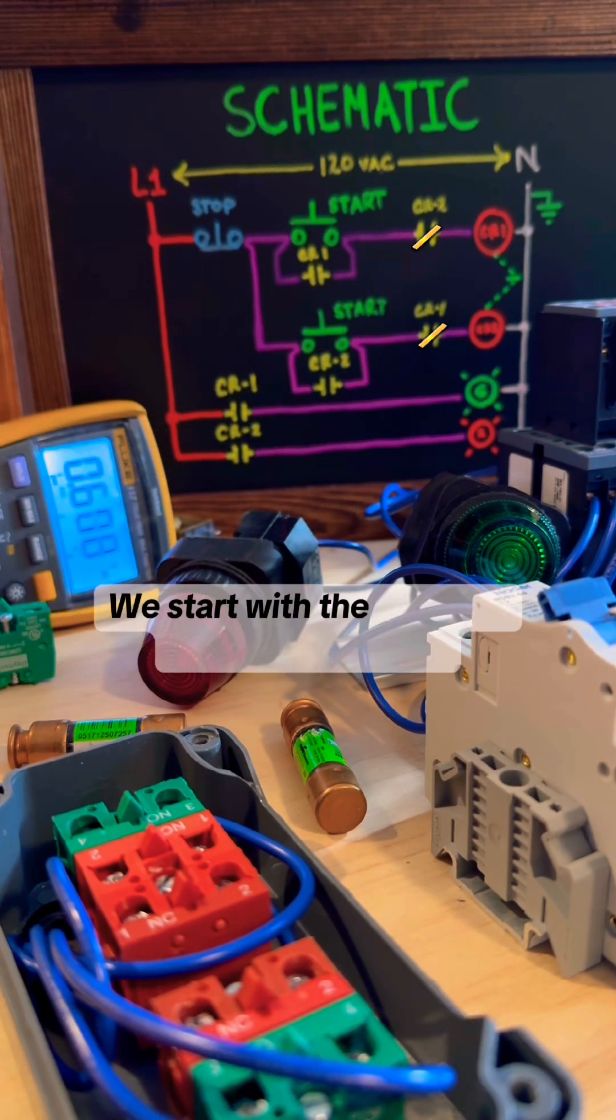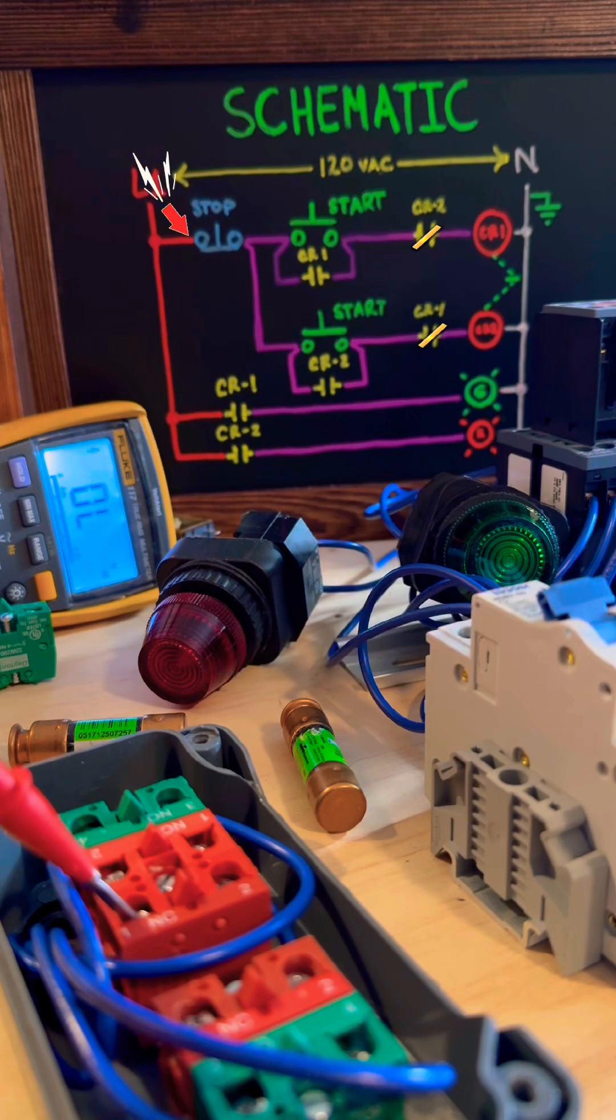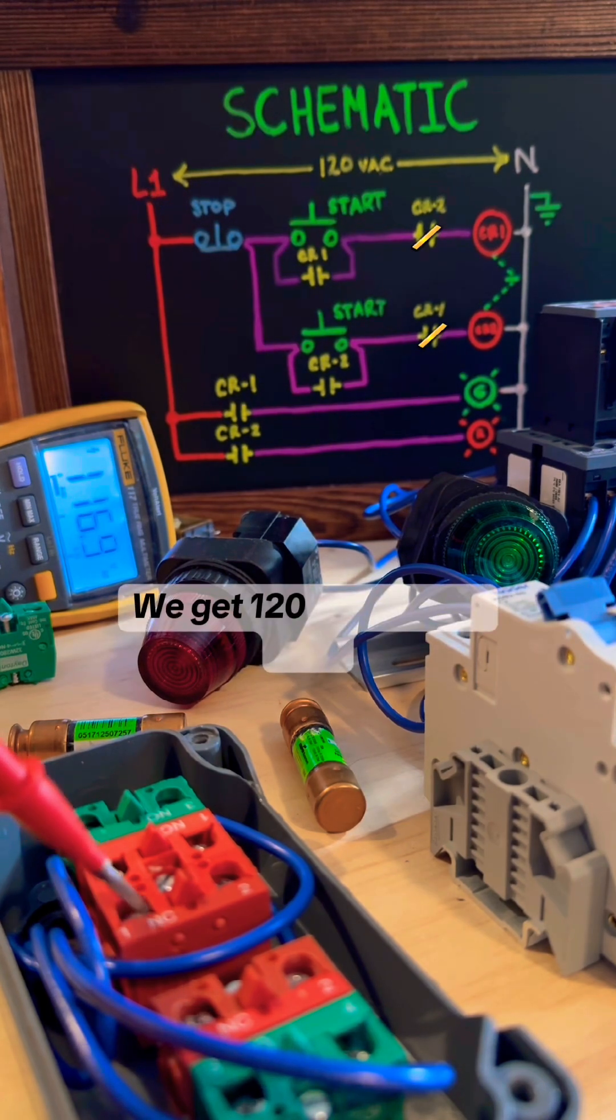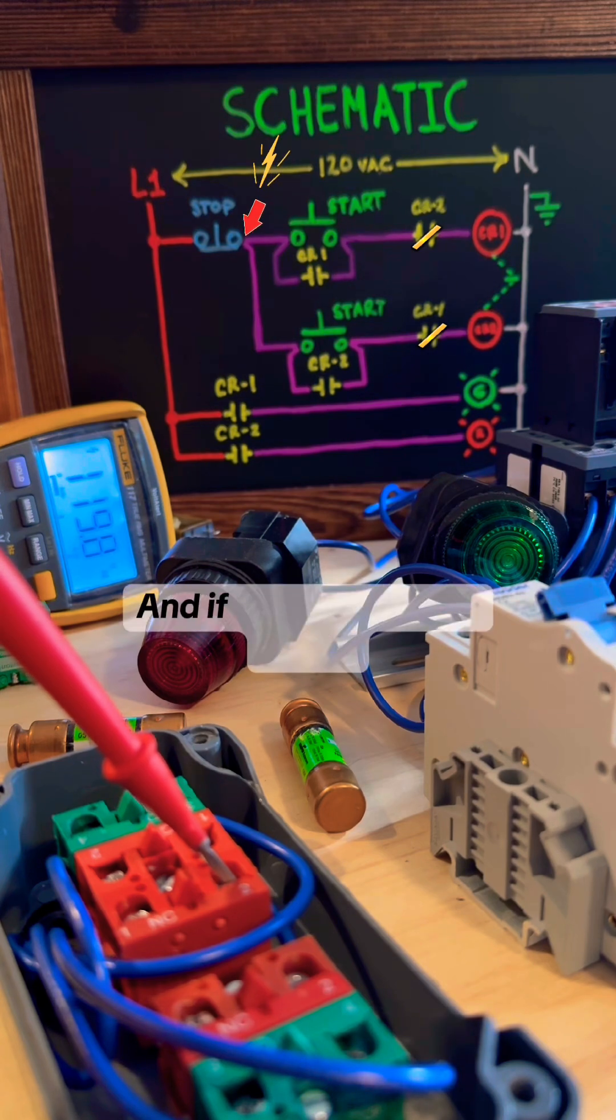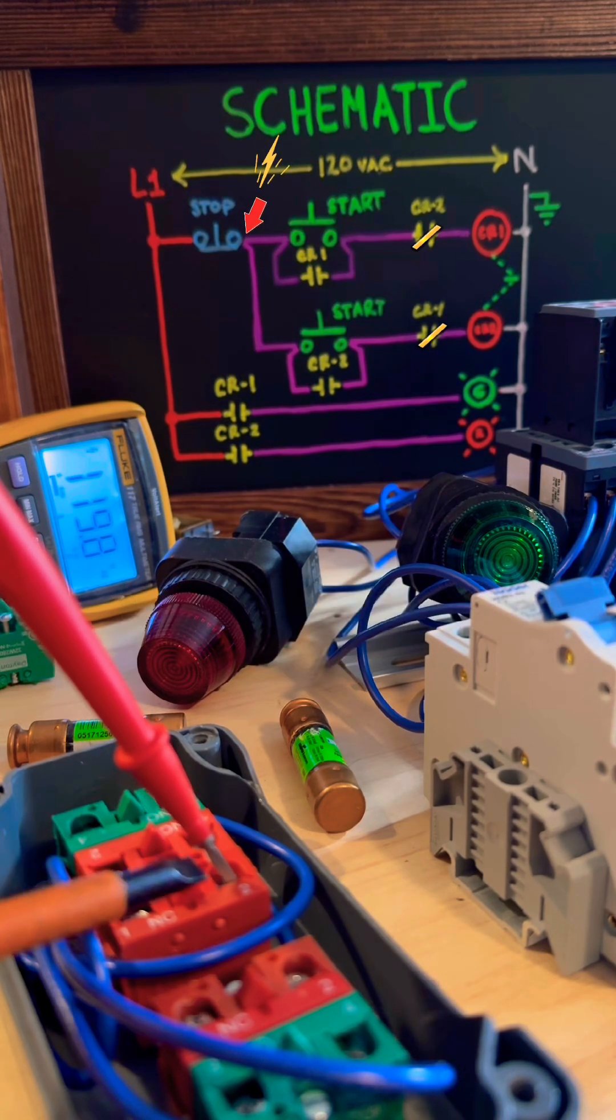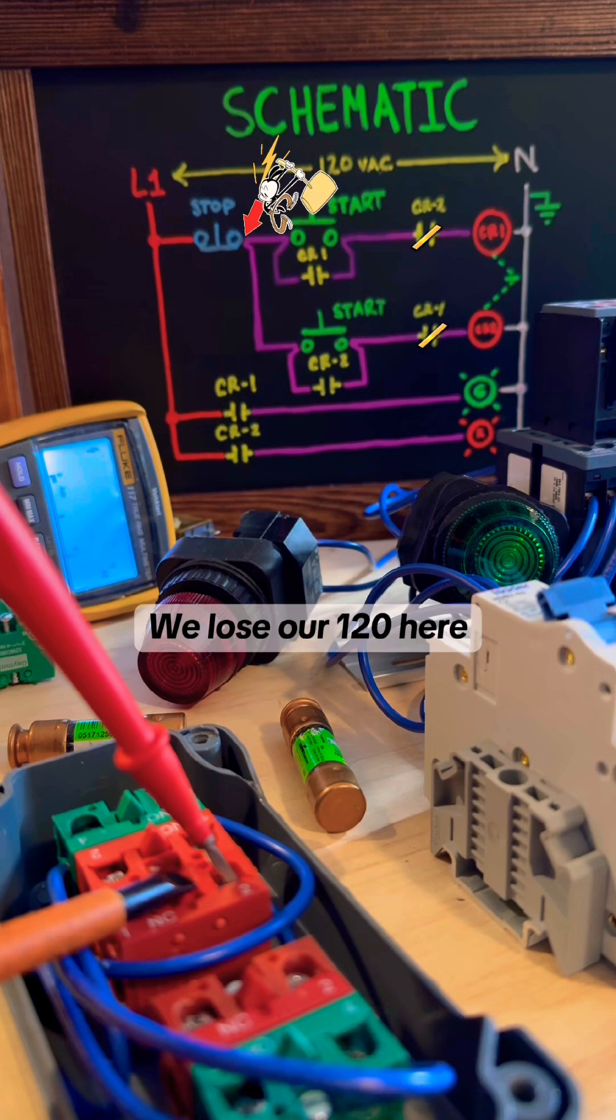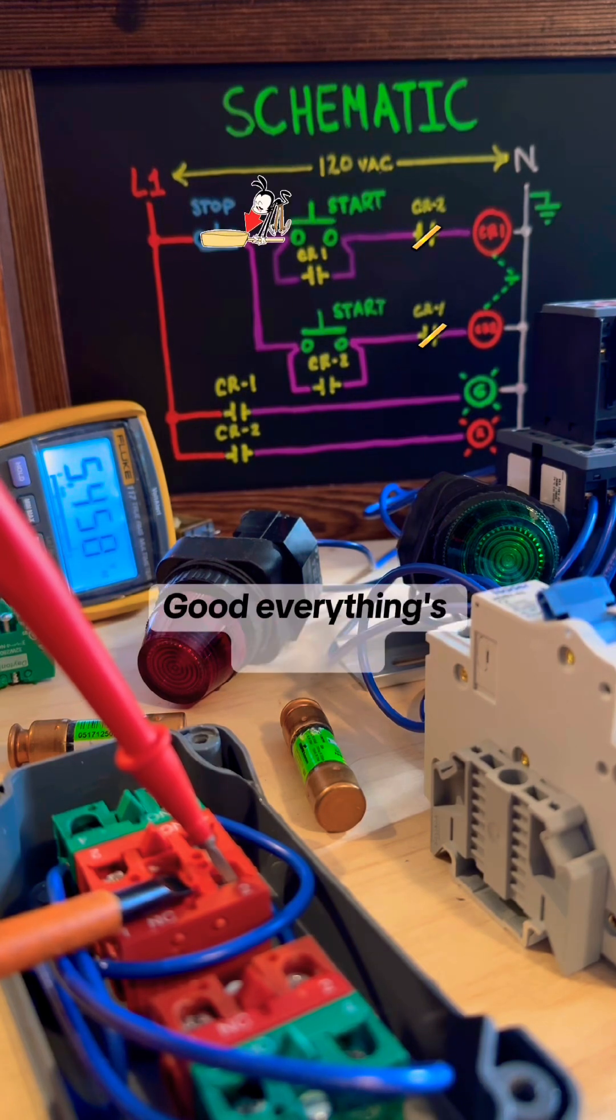We start with the line side of our stop button. We get 120 to the load side, 120, and if the stop button works, we lose our 120 here. Good, everything's working.